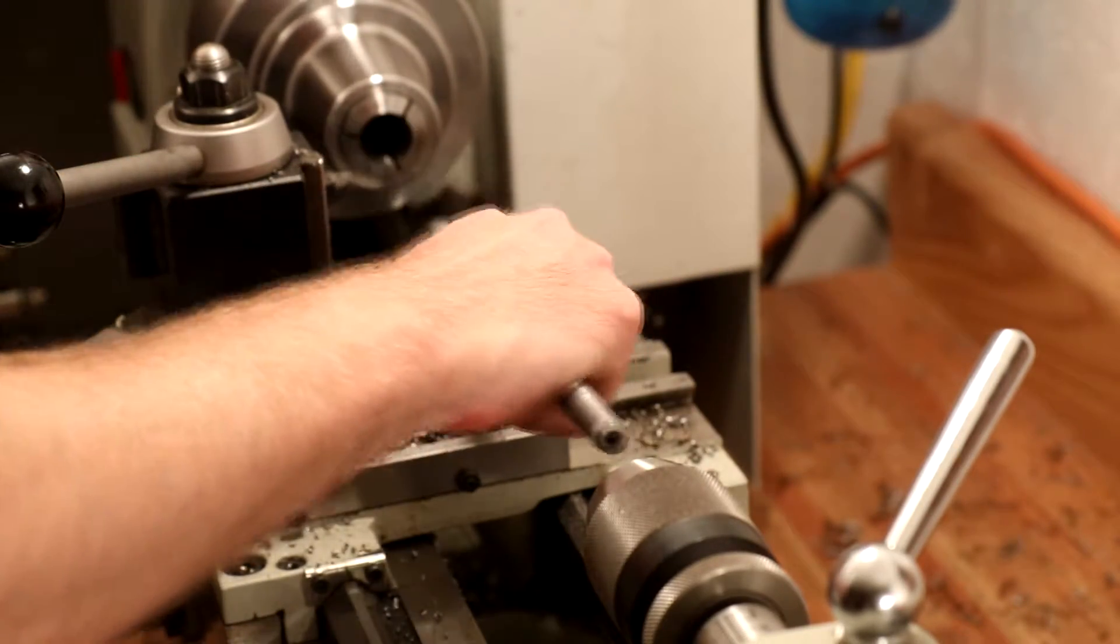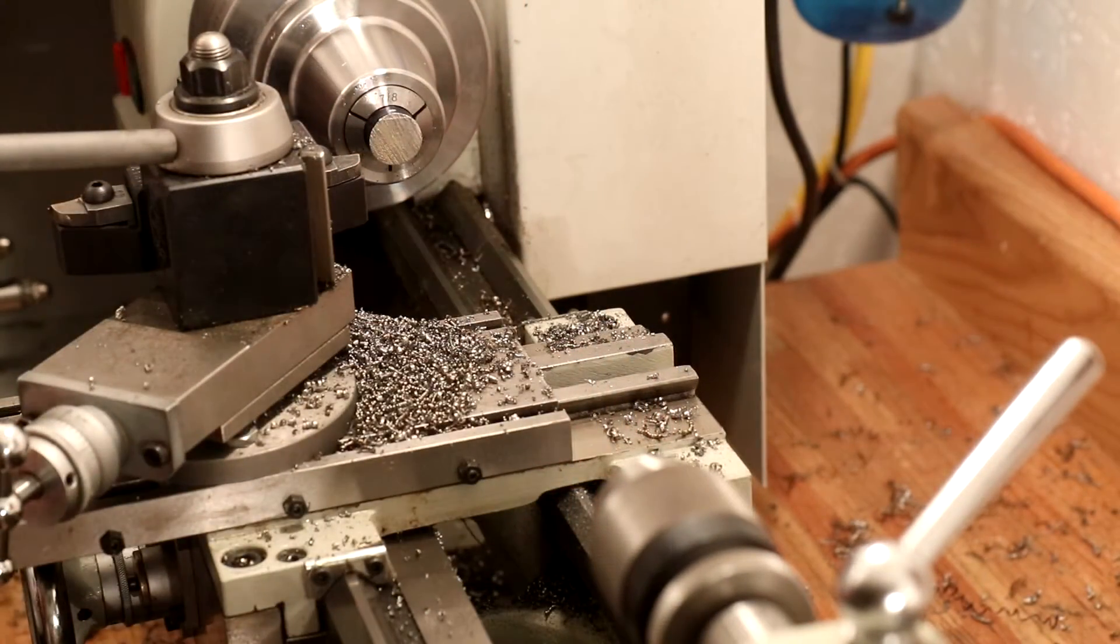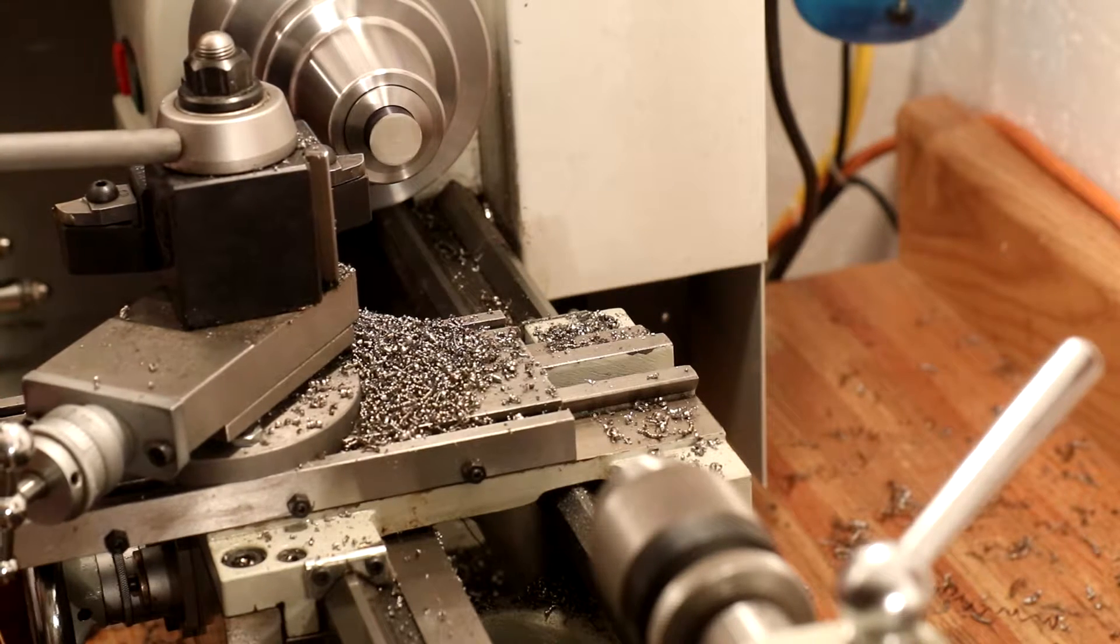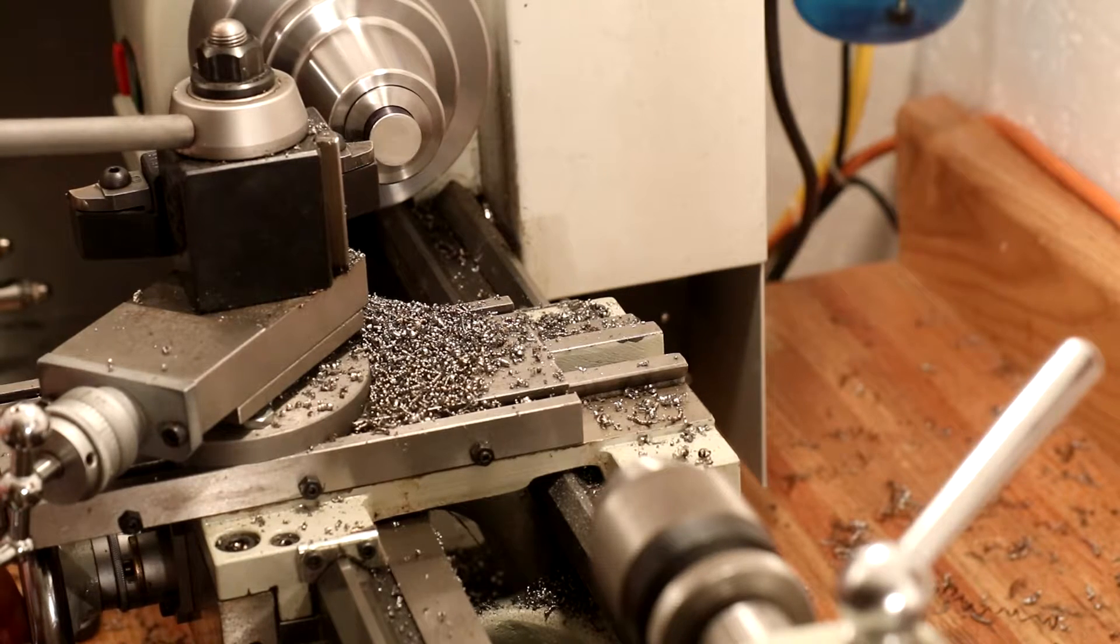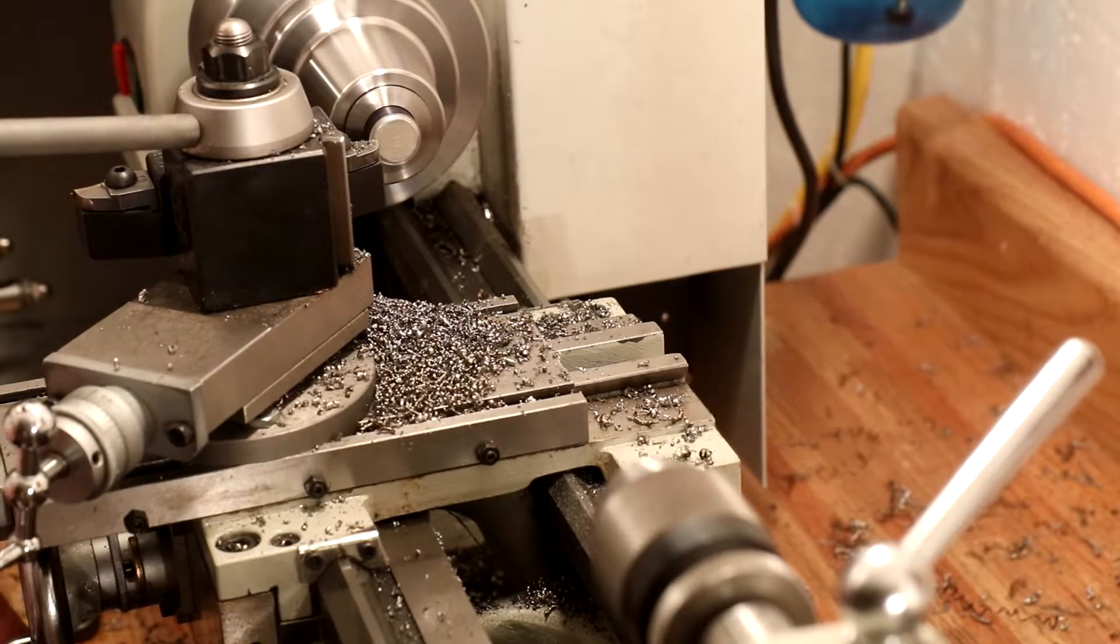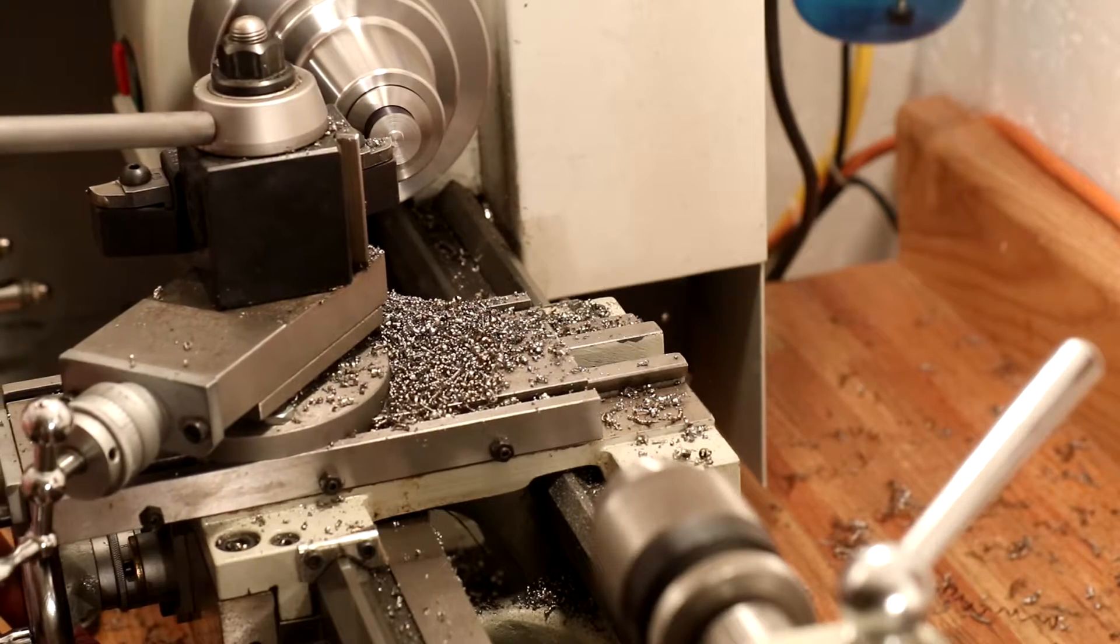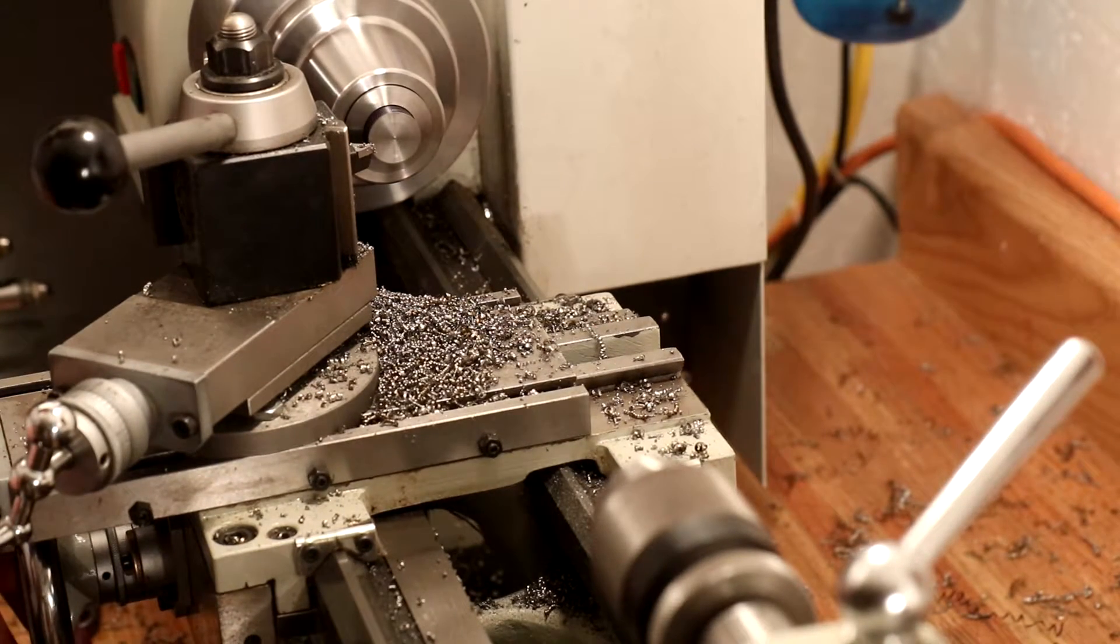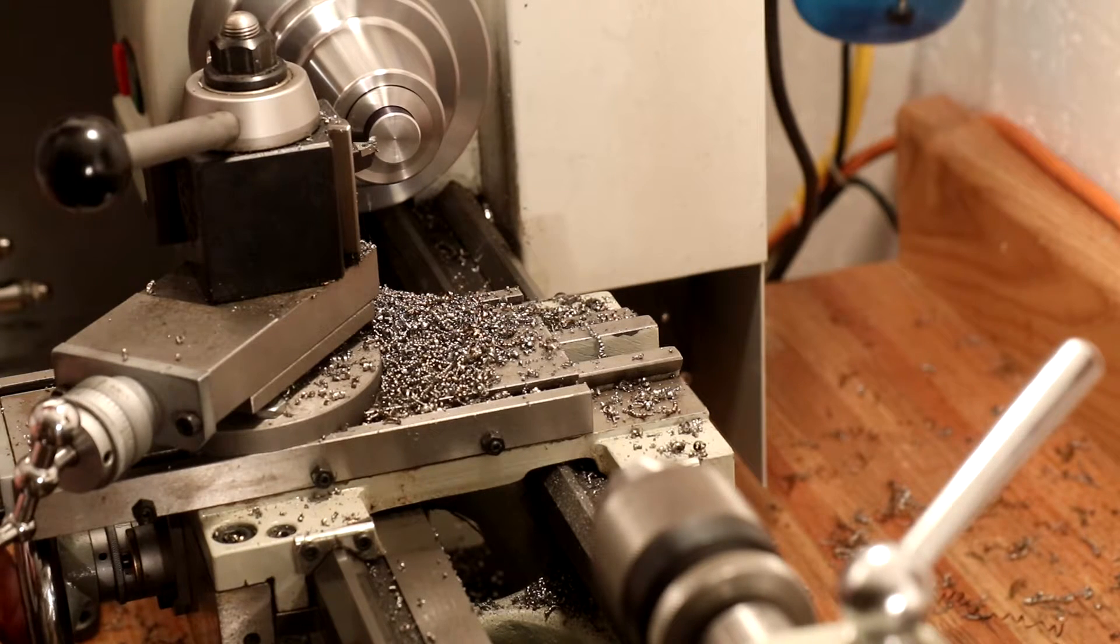The excess material being held by the collet was taken to a saw and cut off, and then the cut was cleaned up with a facing pass on the lathe. The flats for the hex head still have to be cut, but we can add their chamfer now.